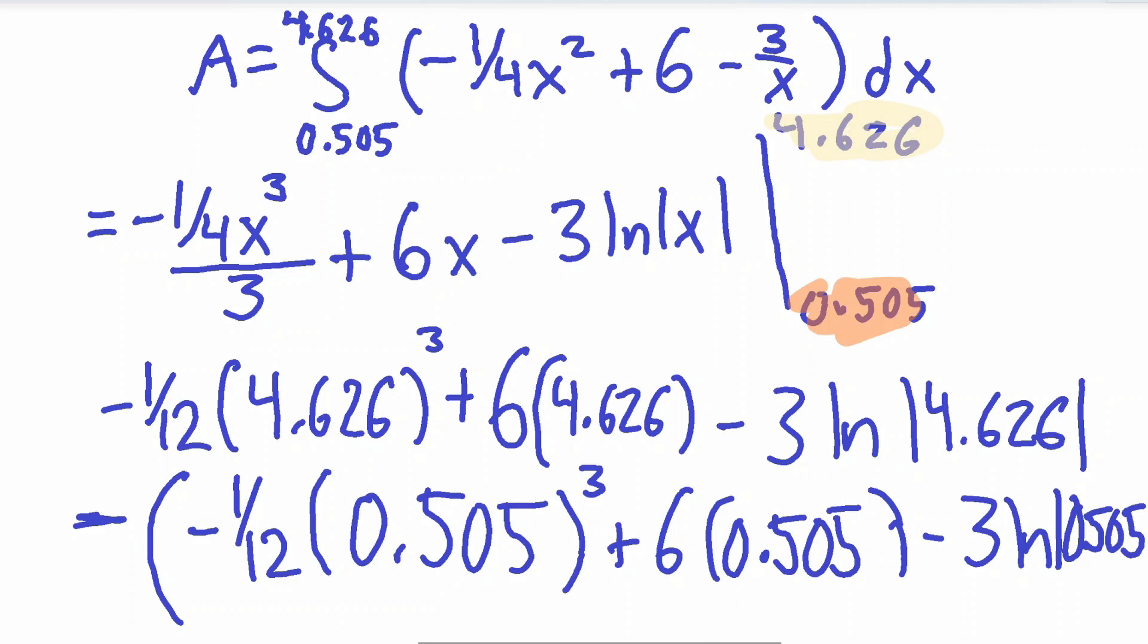Sorry, I forgot to mention this earlier, but when you integrate 3 over X, the ln has to have an absolute value around it. Okay, that is important because you cannot find the natural log of a negative number. So the absolute value has to be there always. Okay, just so you know. So now we have our equation, we make this look a little neater.